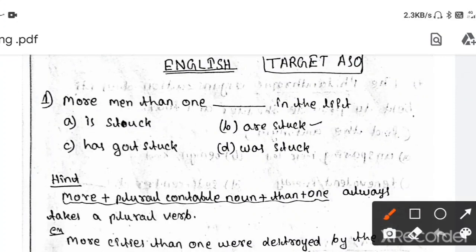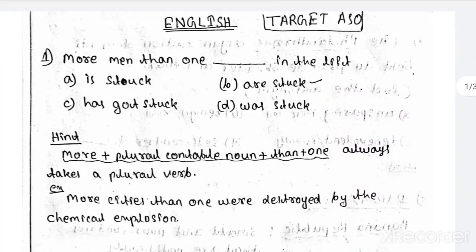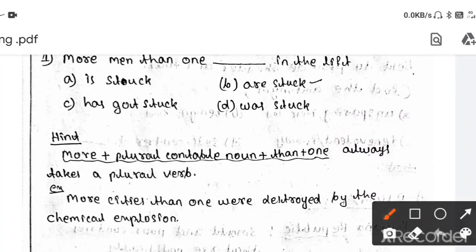Let's start with the first question. More men than one dash in the lift. Your options are: is stuck, are stuck, has got stuck, then was stuck. And I have written here answer is are stuck. Then the question arises, why? I have given your hint: more plus plural countable noun plus than plus one always takes a plural verb. That's why here a plural verb is are, then the answer is your are stuck. You can also take an example: more cities than one were destroyed by the chemical explosion.